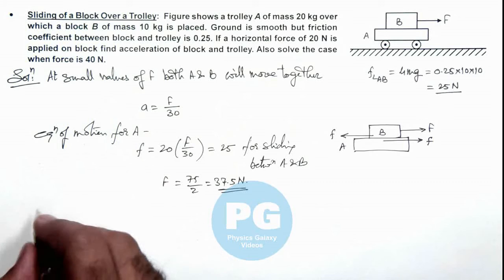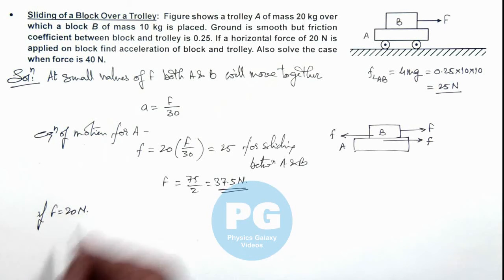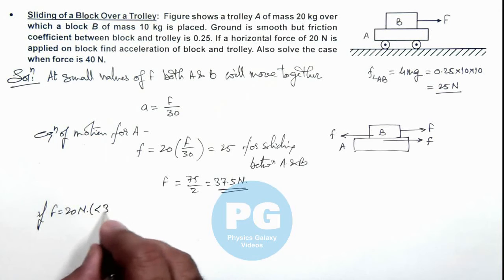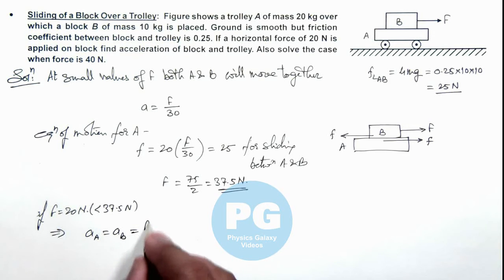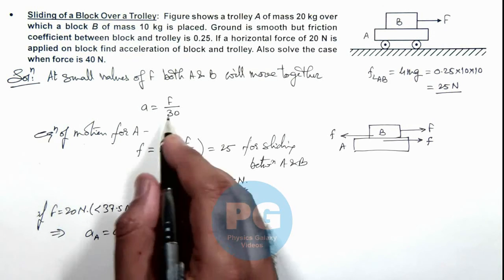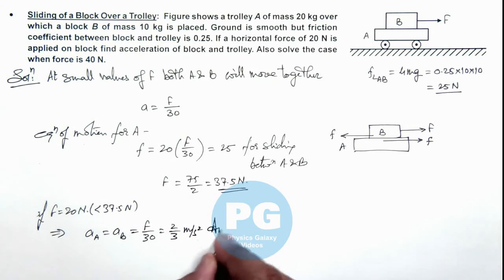Now we can discuss the two cases. If capital F is equal to 20 newton, here we can see this is less than 37.5 newton. This implies acceleration of A is equal to acceleration of B, and this is equal to F by 30 that is equal to 20 newton, so this will be 2 by 3 meter per second square which is the result of this problem.